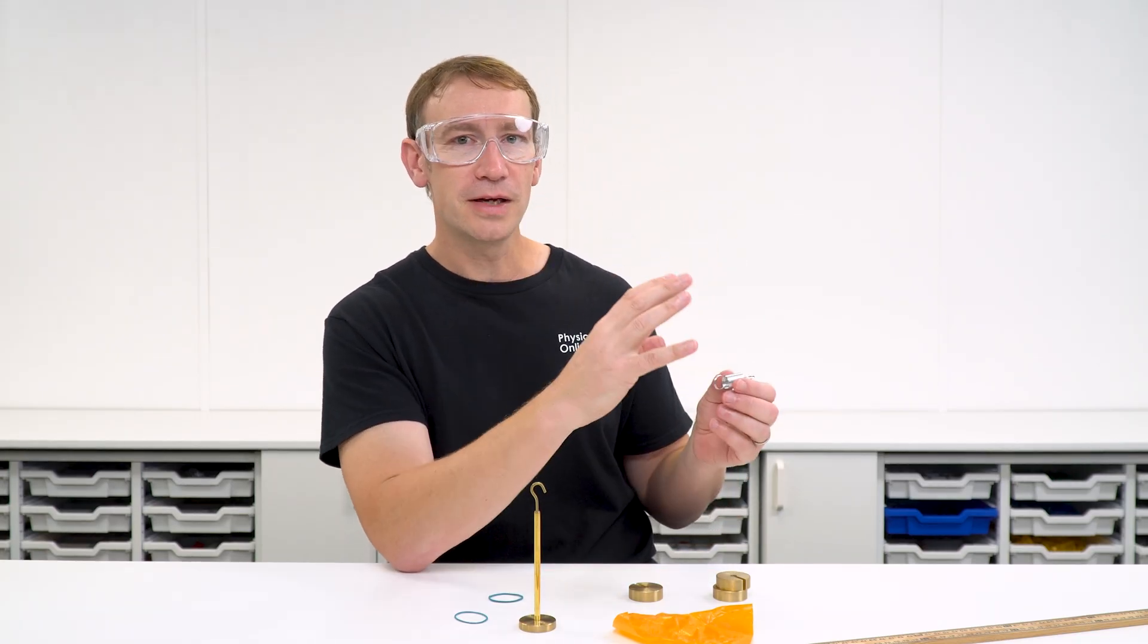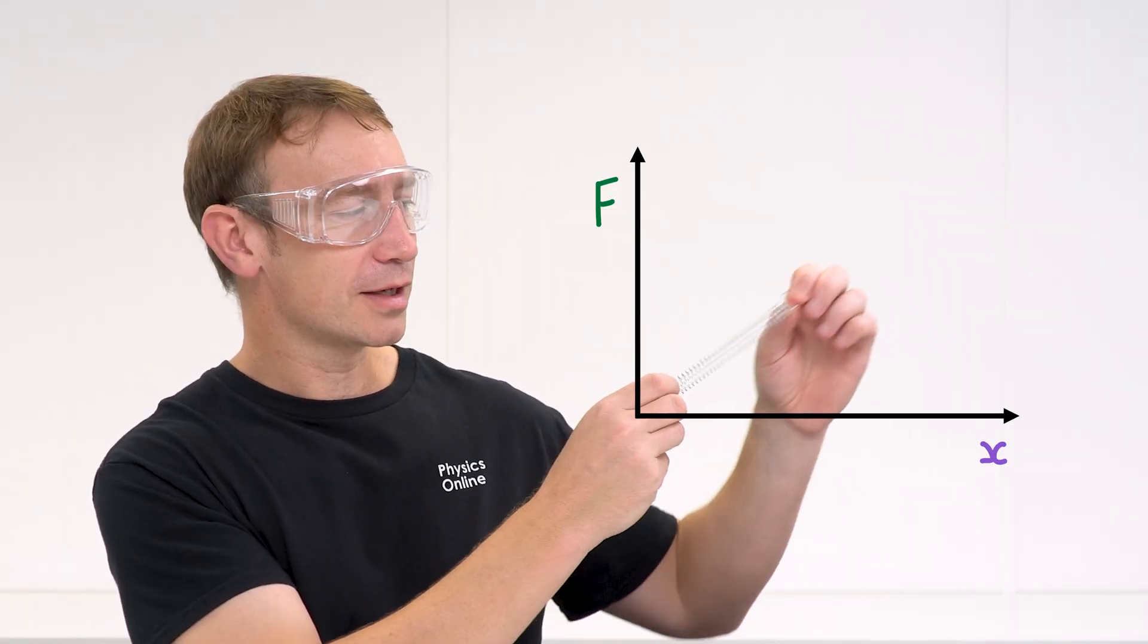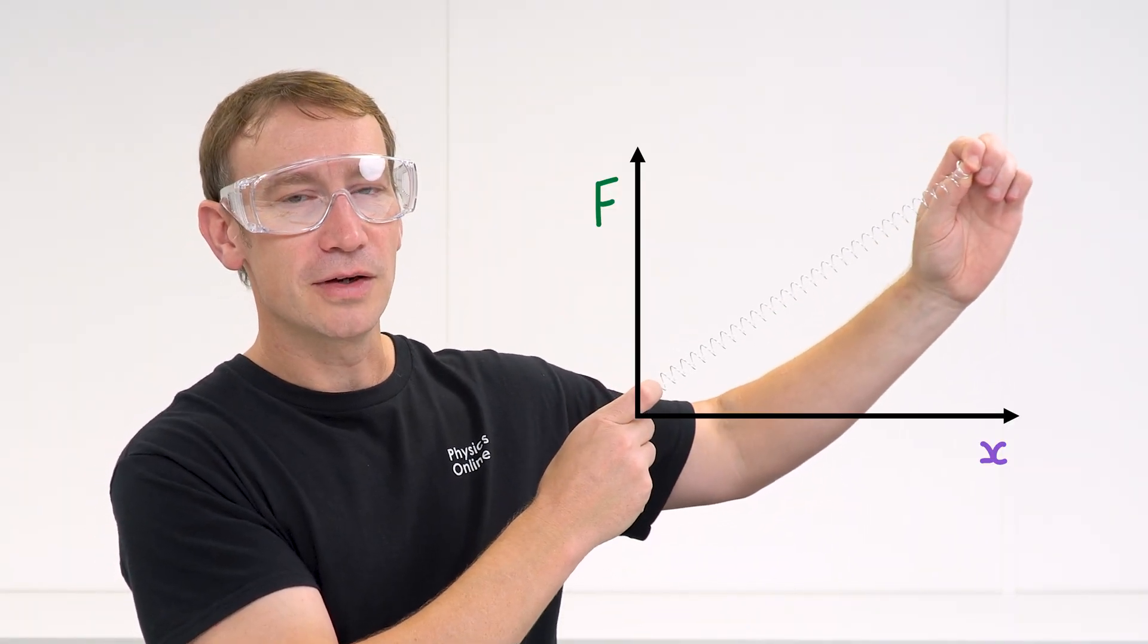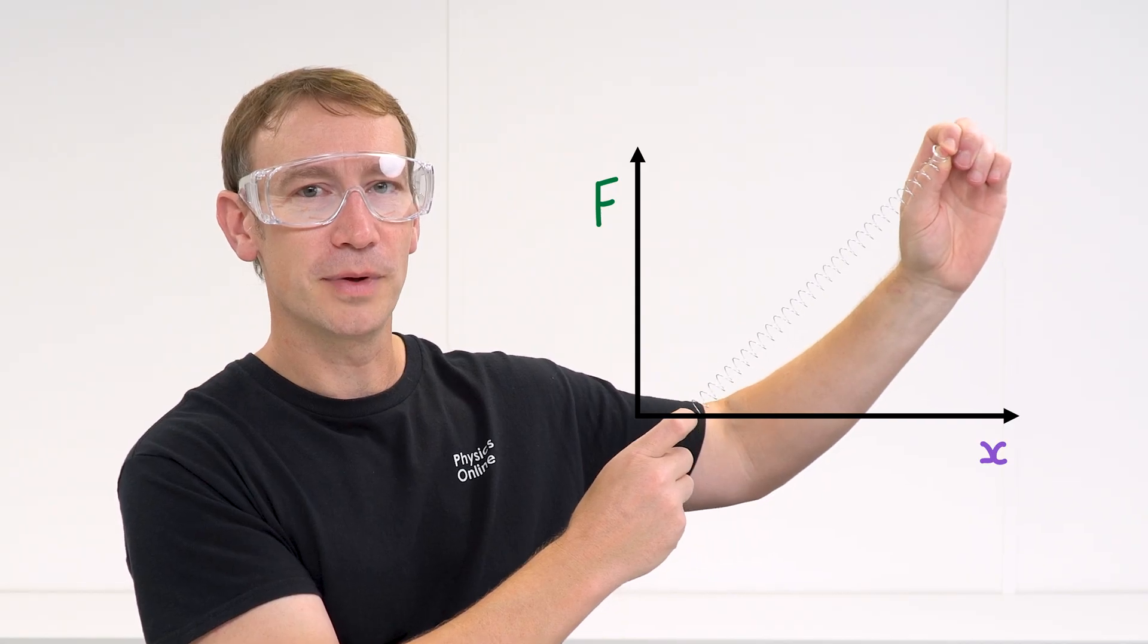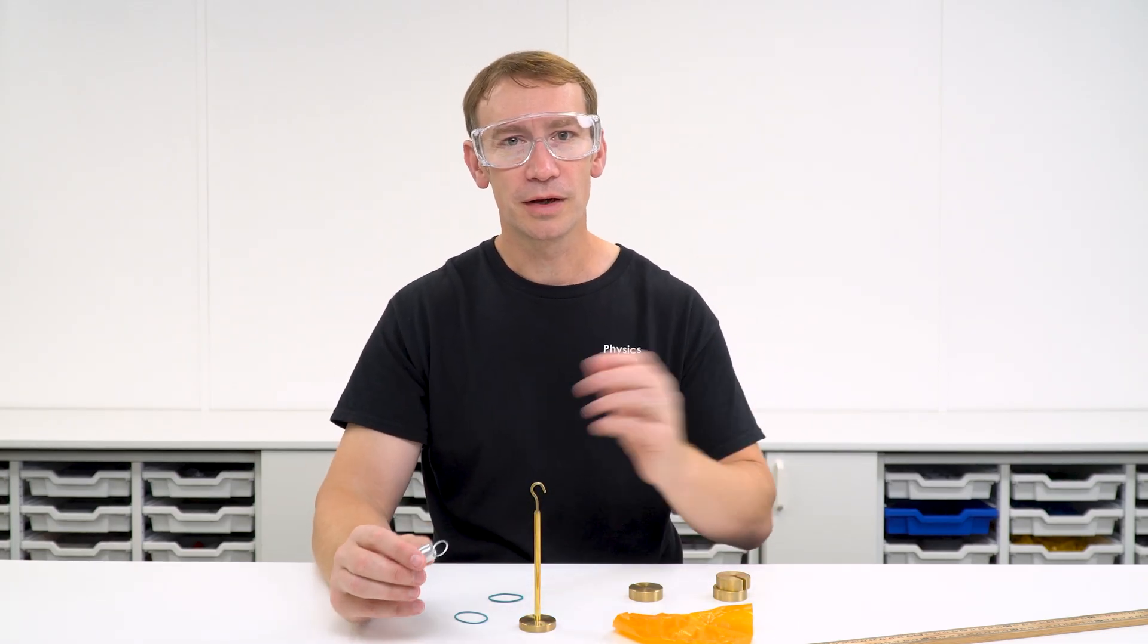Now with this one here, and I've got another video where I explain about Hooke's law, as you apply a force to an object we get this linear region where the extension is proportional to the force being applied. But we get a different kind of behavior when we're looking at rubber and polymers.